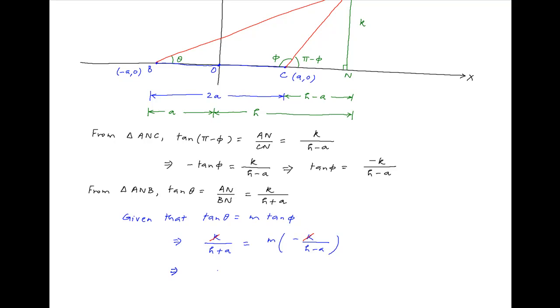Cross multiplying we get H - A = -M(H + A).